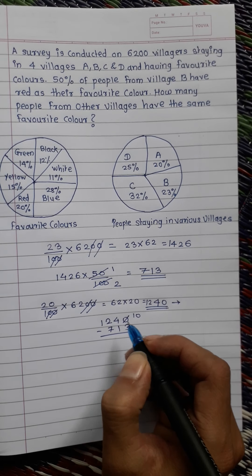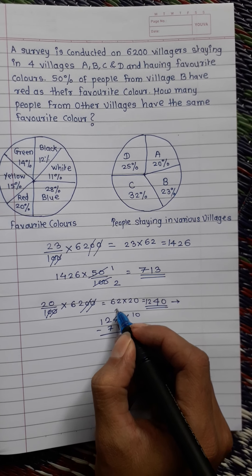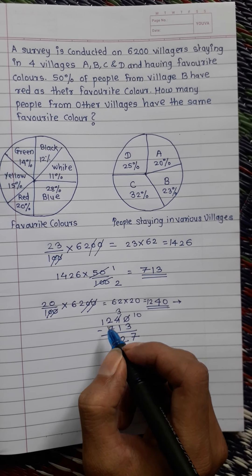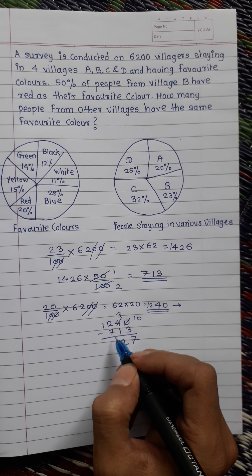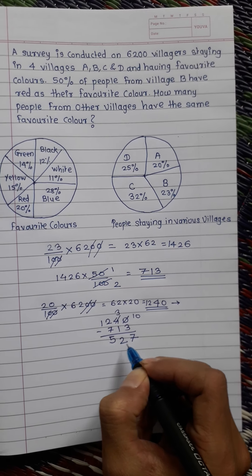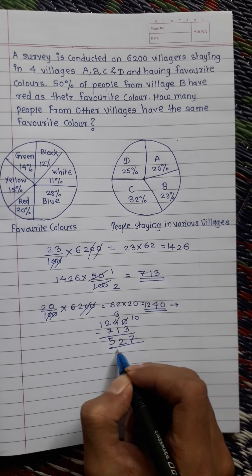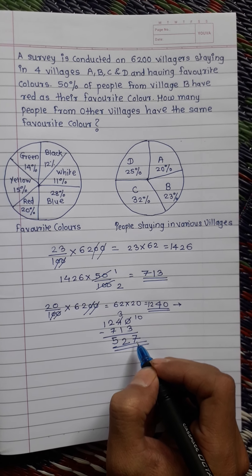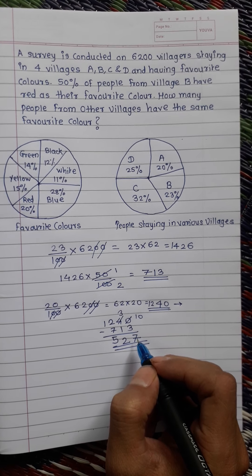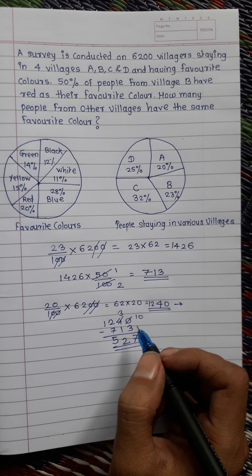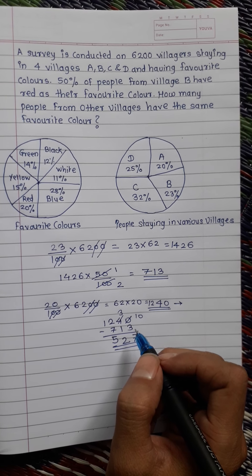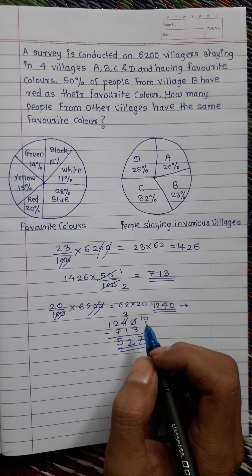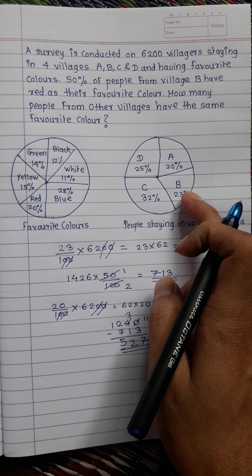This gives us 527. It means 527 villagers like the red color but are not staying in village B.